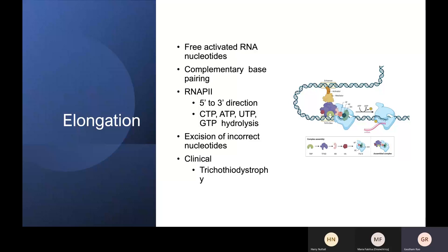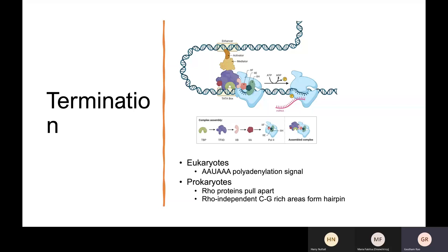In eukaryotic termination, enzymes cut mRNA after a polyadenylation signal, specifically AAUAAA. In prokaryotic termination, there are two mechanisms. First, Rho-dependent termination: Rho proteins bind to certain sequences and climb up the mRNA to pull the RNA and DNA apart. Second, Rho-independent termination: a cytosine- and guanine-rich area forms a hairpin as C and G bind together, causing polymerase to stall, and the subsequent uracil region has weak binding to the adenine on the template DNA, so they separate.